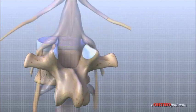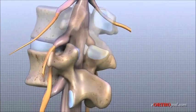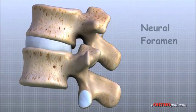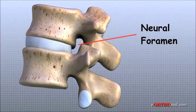Two spinal nerve roots exit the sides of each spinal segment, one on the left and one on the right. As the nerves leave the spinal cord, they pass through a small, bony tunnel on each side of the vertebra called a neural foramen.